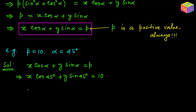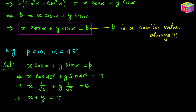Substituting cos(45°) = sin(45°) = 1/√2: x·(1/√2) + y·(1/√2) = 10. Multiplying both sides by √2 gives x + y = 10√2, and that is the desired equation of the straight line.